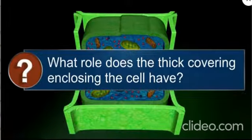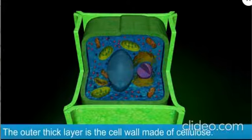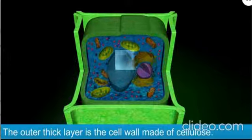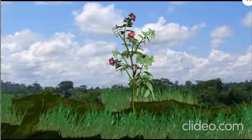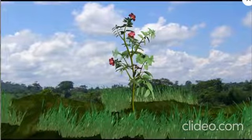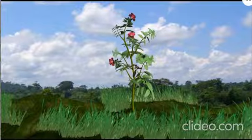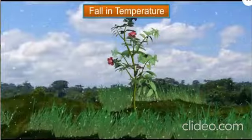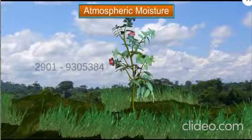What role does the thick covering enclosing the cell have? The outer thick layer is the cell wall made of cellulose. Plants cannot move from one place to another. Therefore, plant cells require cell walls to protect the cell from climatic changes like a rise or fall in temperature, high wind speeds, and atmospheric moisture.